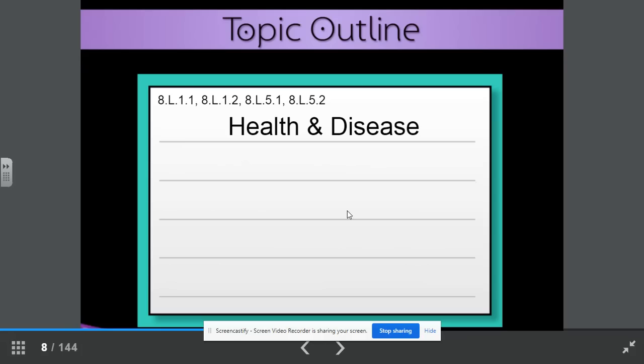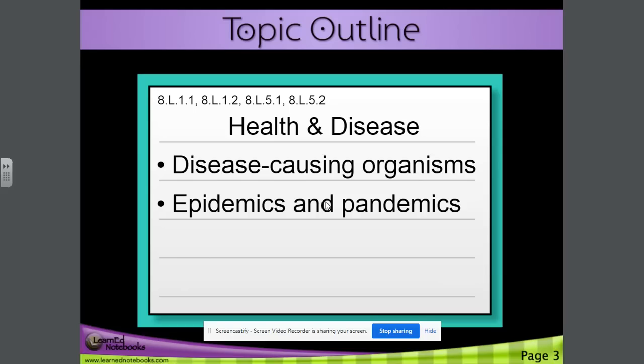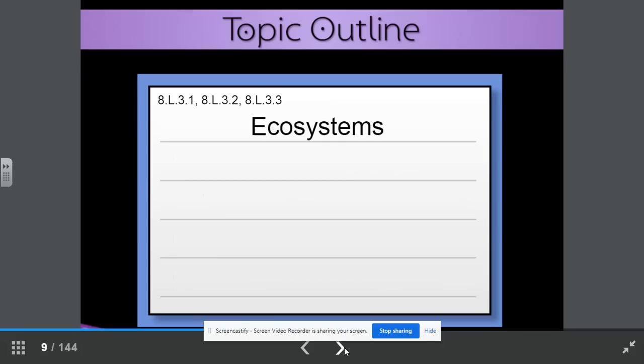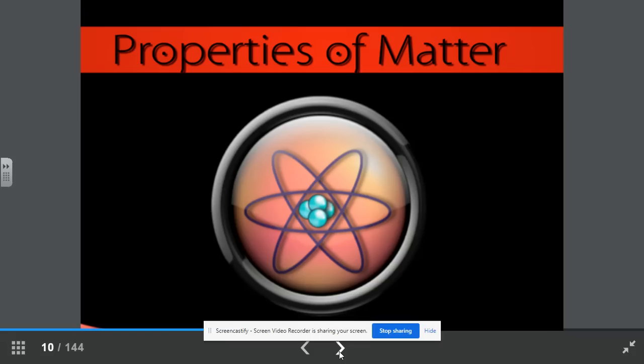Health and disease, including disease-causing organisms, epidemics and pandemics, something we know all too well, right? Food and energy, and healthy practices. Ecosystems, including abiotic and biotic factors, resources and interactions, energy flow, and the cycling of matter. All right, let's begin.